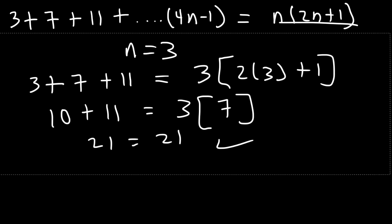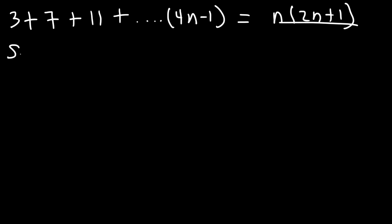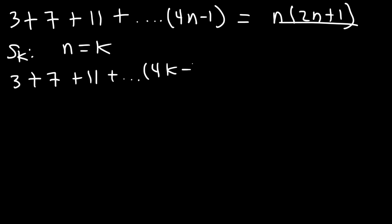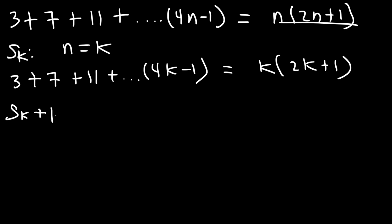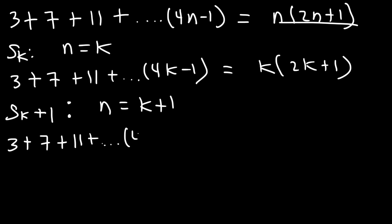So what we're going to do is use a letter K. We're going to assume that it's true when n is equal to K. So let's replace n with K: 3 plus 7 plus 11 plus 4K minus 1, and we're going to assume that this is true. Our task is to prove that the next term is going to be true, and that is when n is equal to K plus 1. So on the left, we still have 3 plus 7 plus 11 plus dot dot dot 4K minus 1, but then we add the next term. The next term — we just replace K with K plus 1 — so it's going to be 4 times K plus 1 minus 1.